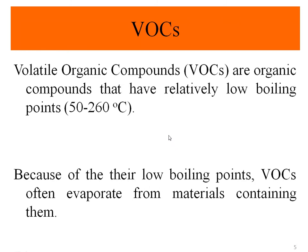Volatile organic compounds are organic compounds that have a relatively low boiling point temperature, usually between 50 and 260 degrees Celsius. Those chemicals with higher vapor pressure have lower boiling point temperatures and are more fully volatile. Conversely, chemicals with lower vapor pressure have higher boiling point temperatures and are less volatile.